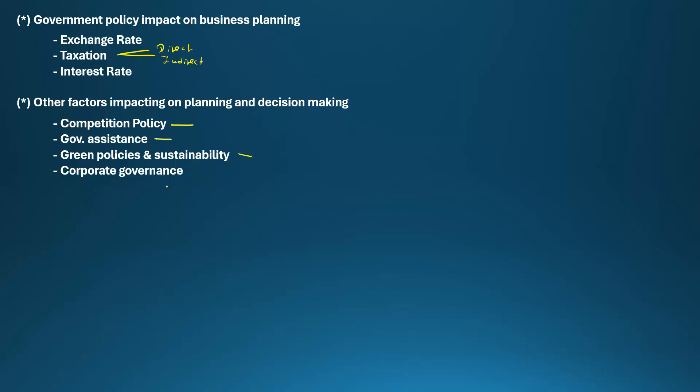Regarding corporate governance, the chairman and CEO should be two different people. Giving both roles to the same person gives that person an abnormal amount of power. There should be a remuneration committee and an audit committee. For an established organization, a one-to-one ratio of executive to non-executive directors is better. For a smaller company, having one non-executive director for every two executive directors is better.